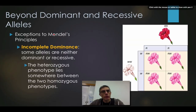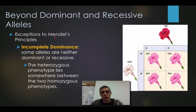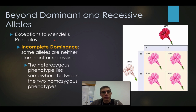In this particular section, we are going to look at other patterns of inheritance — exceptions to Mendel's principles. In Section 11.3, we're going to explore what we call incomplete dominance, co-dominance, and also a situation where you actually have multiple alleles for a single gene.